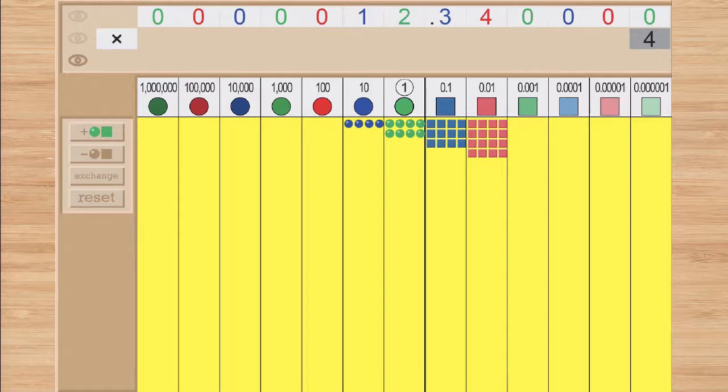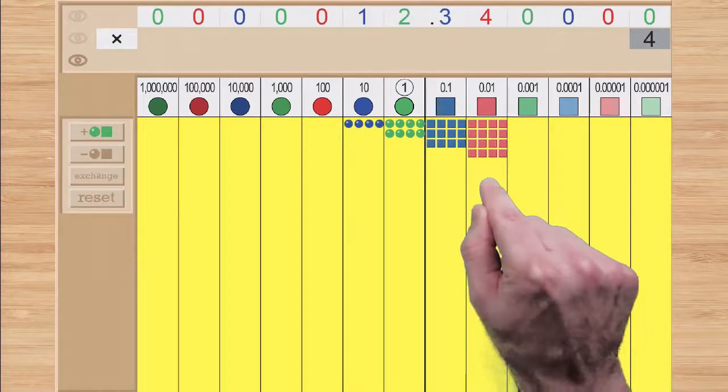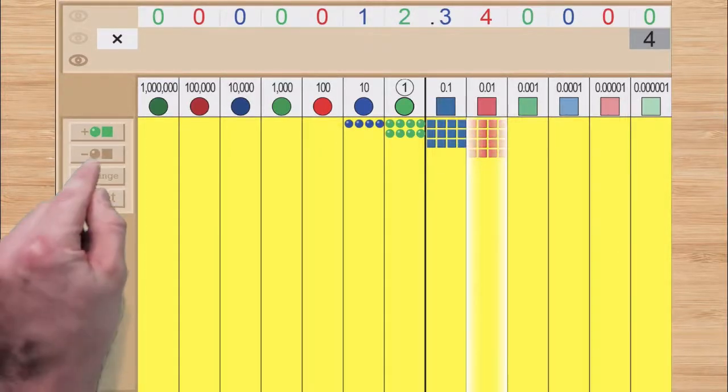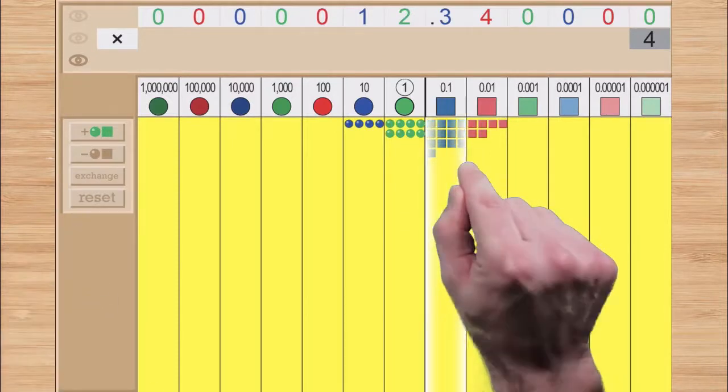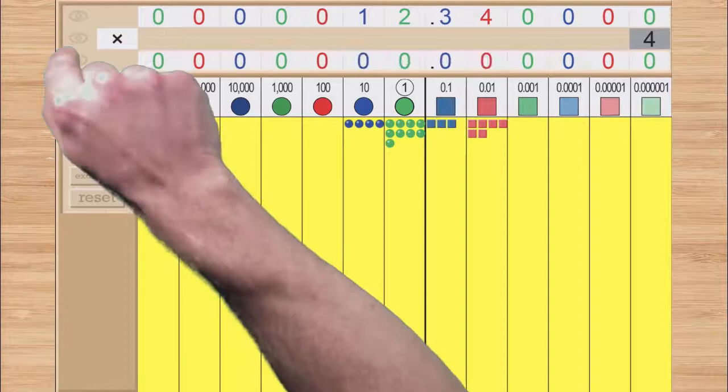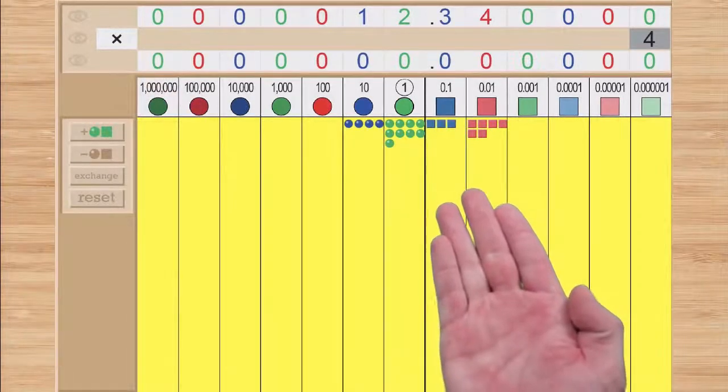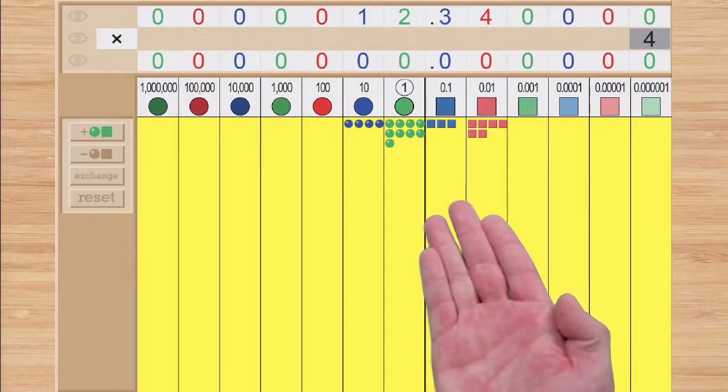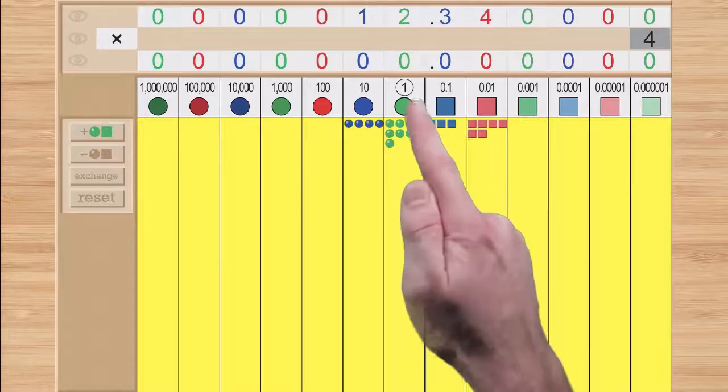Let's see. With a bit of exchanging here and here, we now have 49 and 36 hundredths, which we can symbolize with the cards.